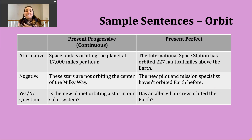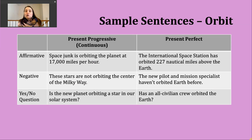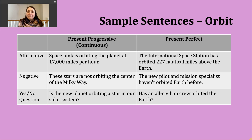Let's practice using our verb of the day, orbit, in two different verb tenses. Today we're going to practice the present progressive — you might also know this as the present continuous — and the present perfect. The present progressive describes an action that is in progress or happening right now. I need two parts: a present form of be (am, is, or are) and the -ing form of the verb. An example: space junk is orbiting the planet at 17,000 miles per hour.